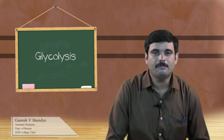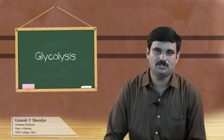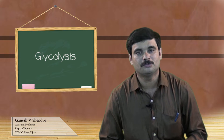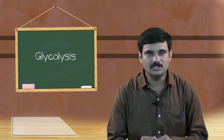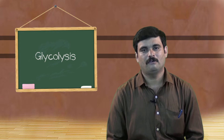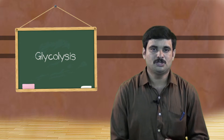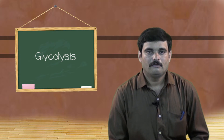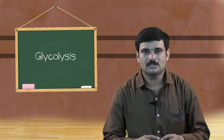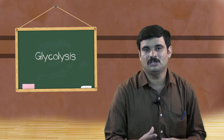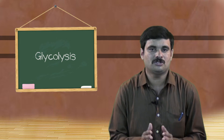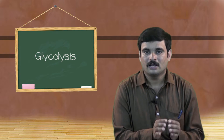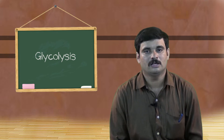Glycolysis is a major step in the process of respiration, which is a very complicated process involving more than 25 steps. This presentation is very basic in nature, suitable for undergraduate students. We are not going to discuss much about reaction mechanisms, control, and regulation, but will focus on the conversion of compounds and the steps involved.